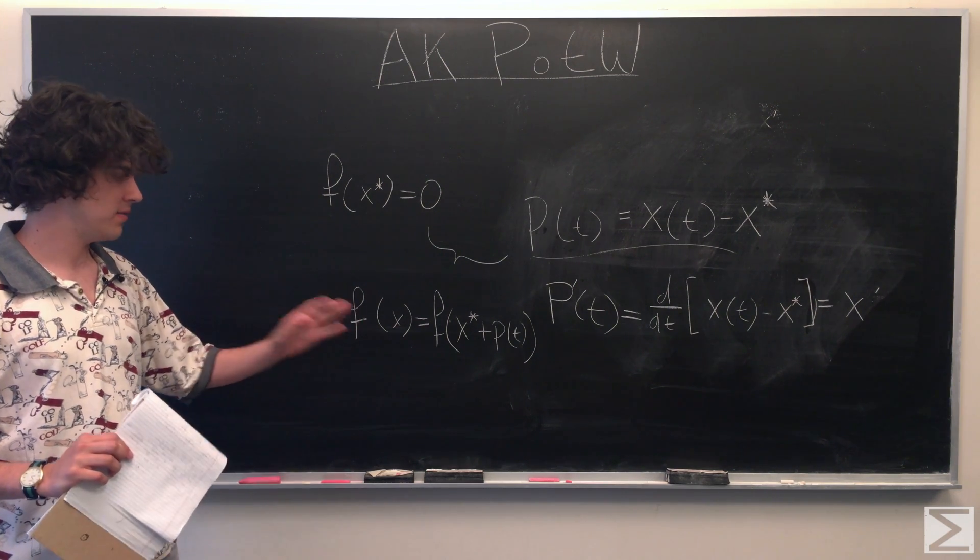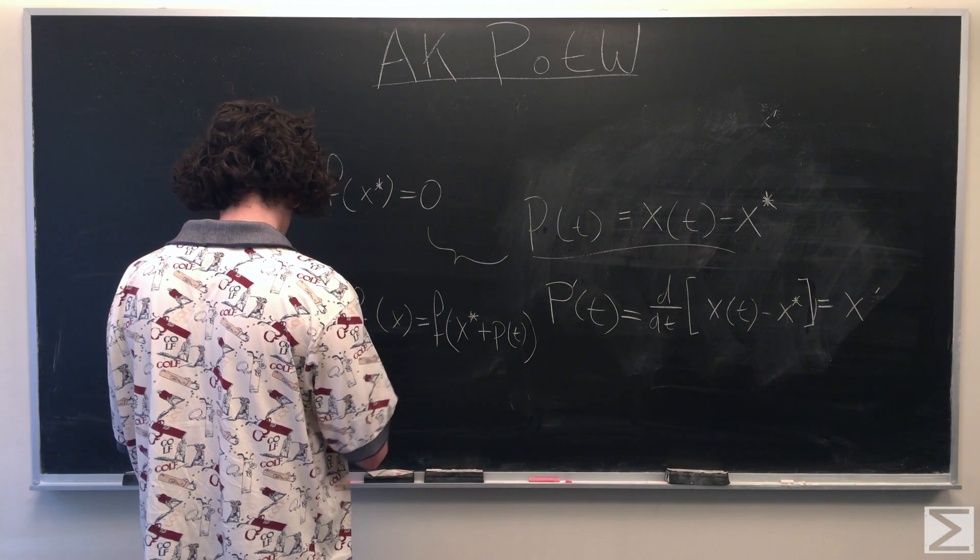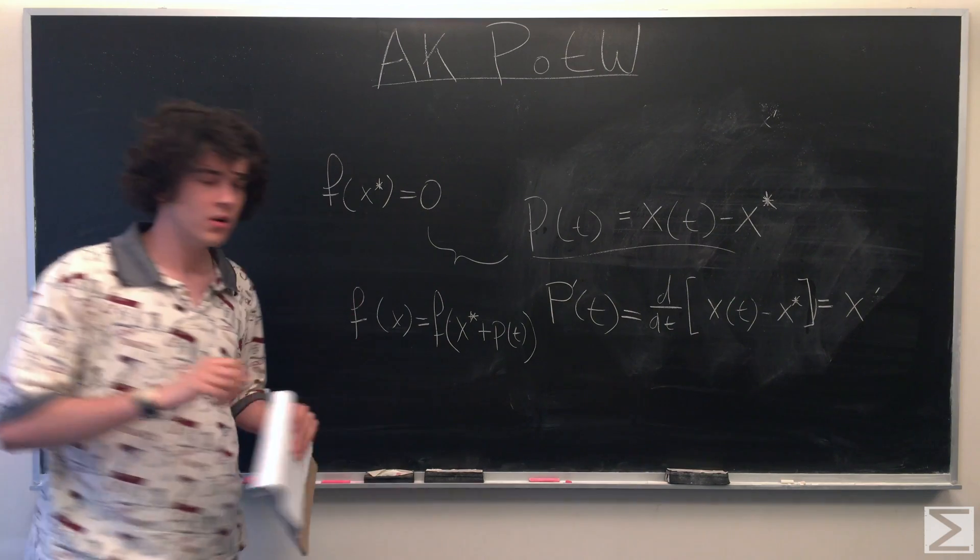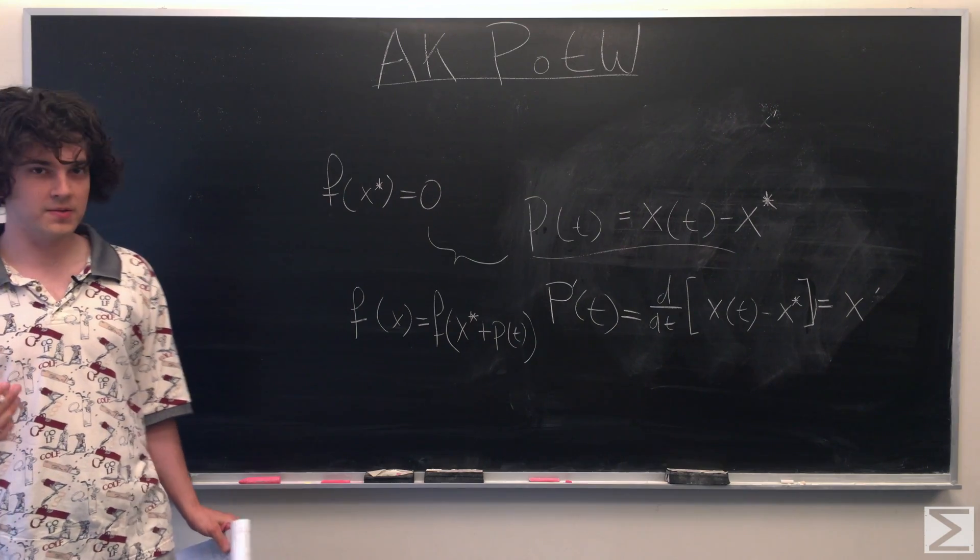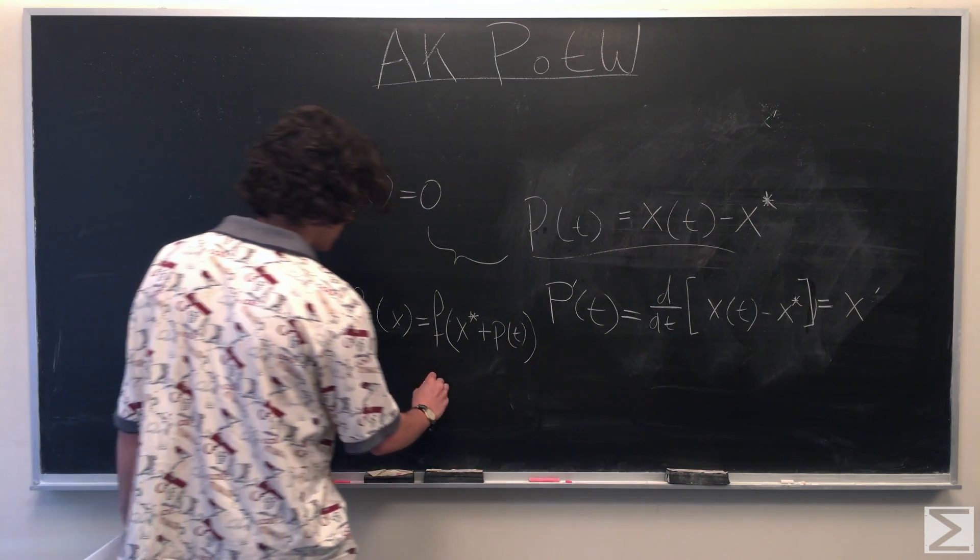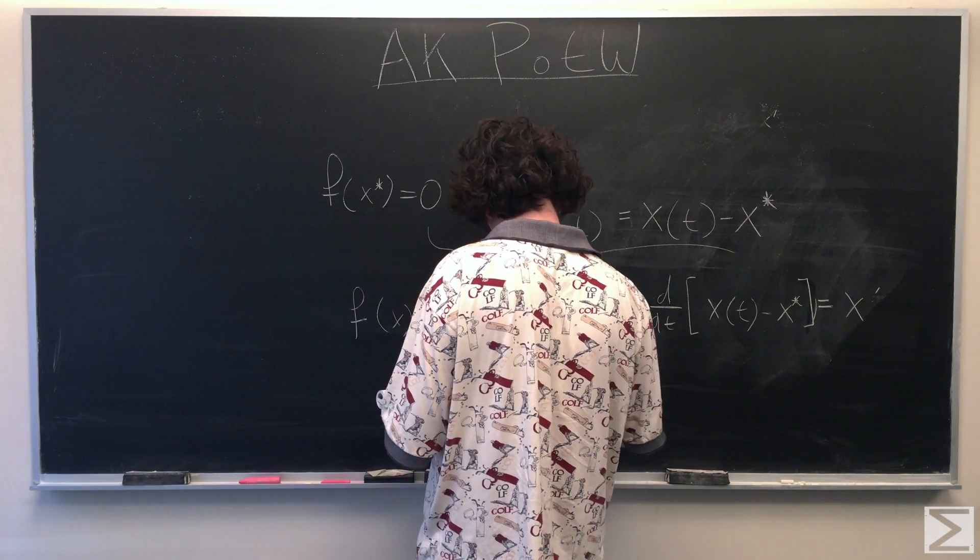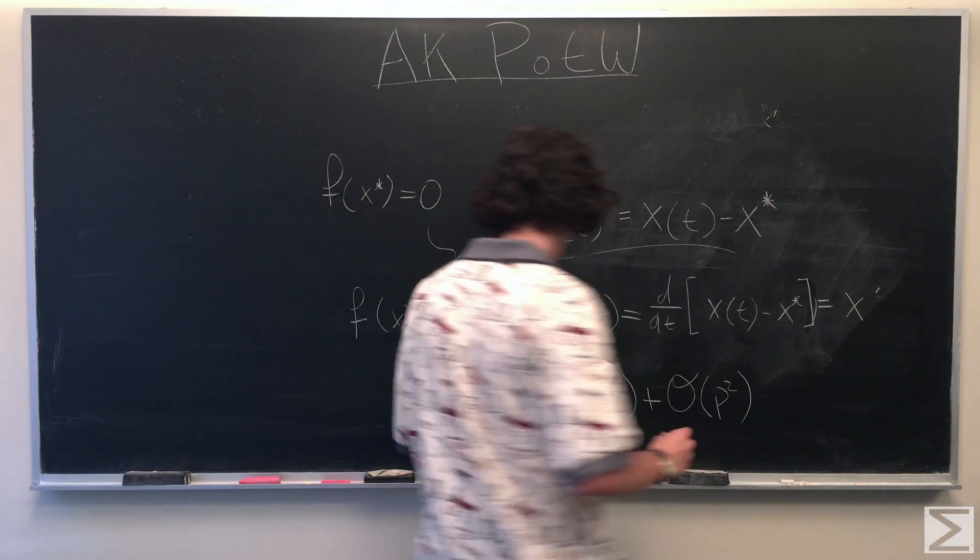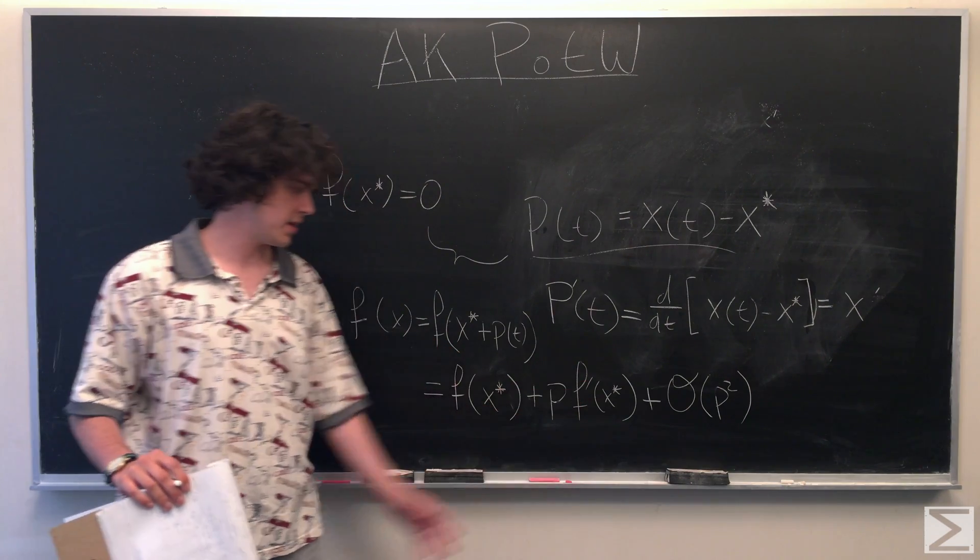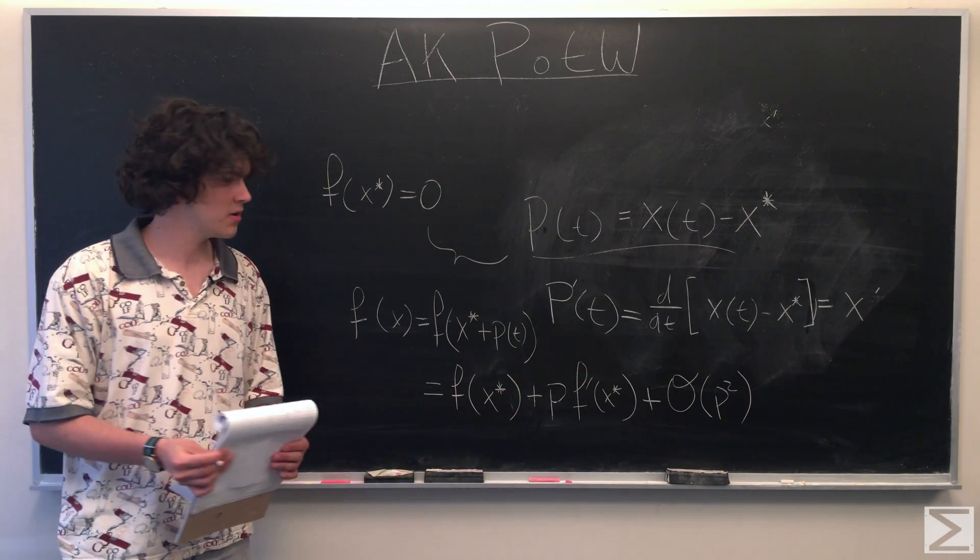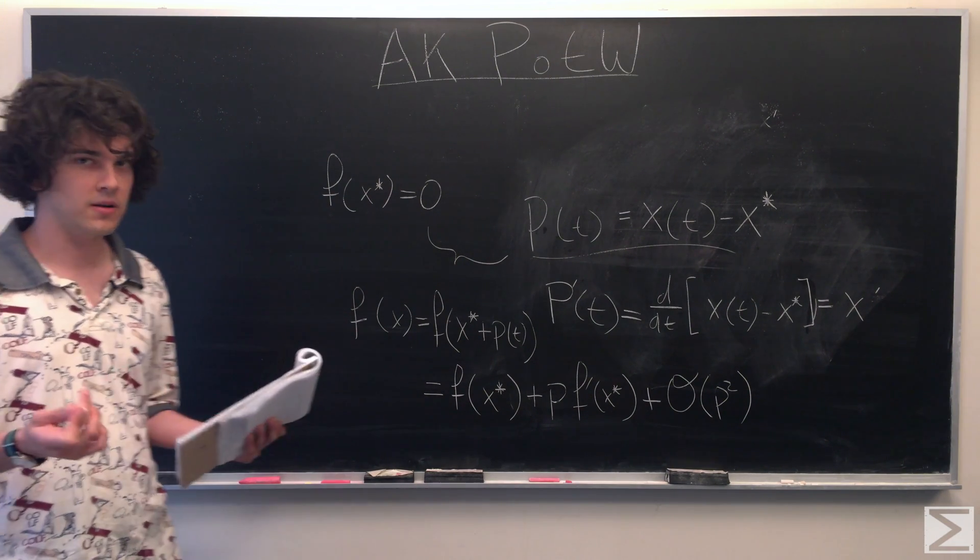So we want to look at the rate of change of f of x as well. Oh, sorry, we don't want to do that. We want to find a fairly good approximation for f of x. So we're going to use a Taylor expansion to do that. So we stop at the order of p squared because when f prime of x is non-zero, that's good enough for us. And so what can we say about this?